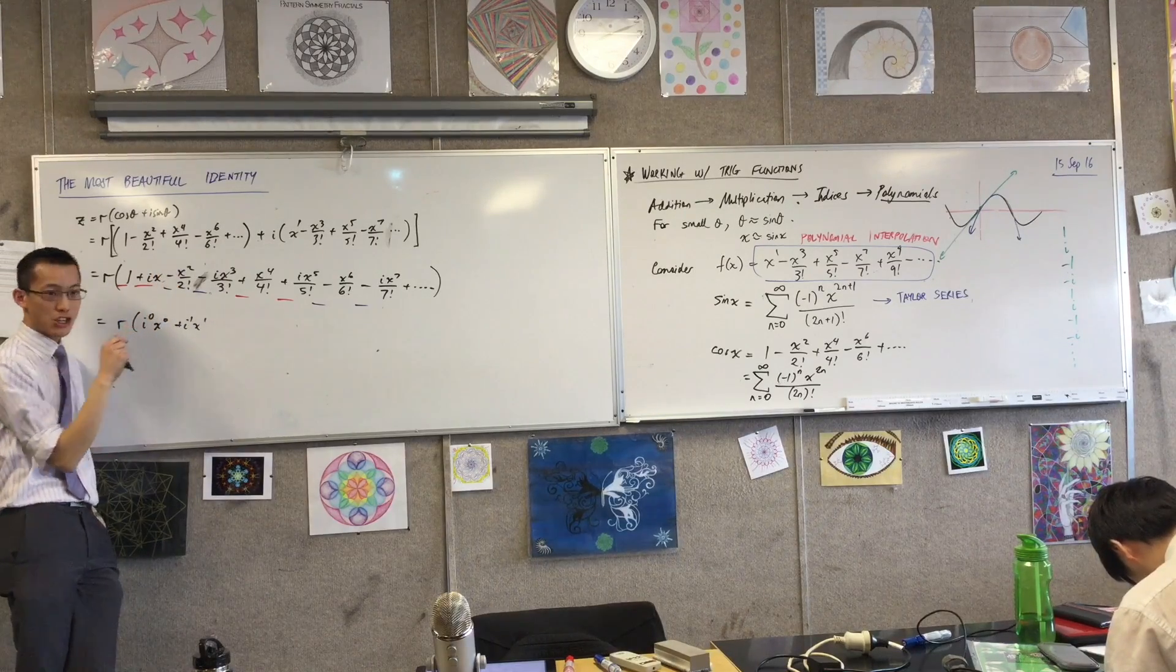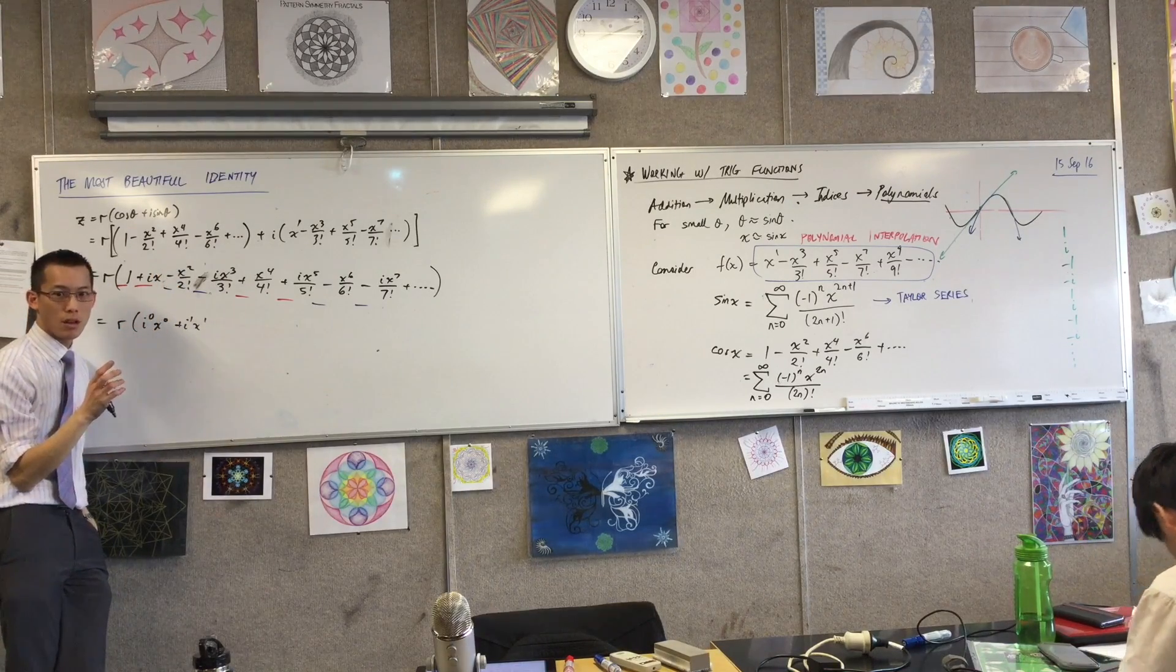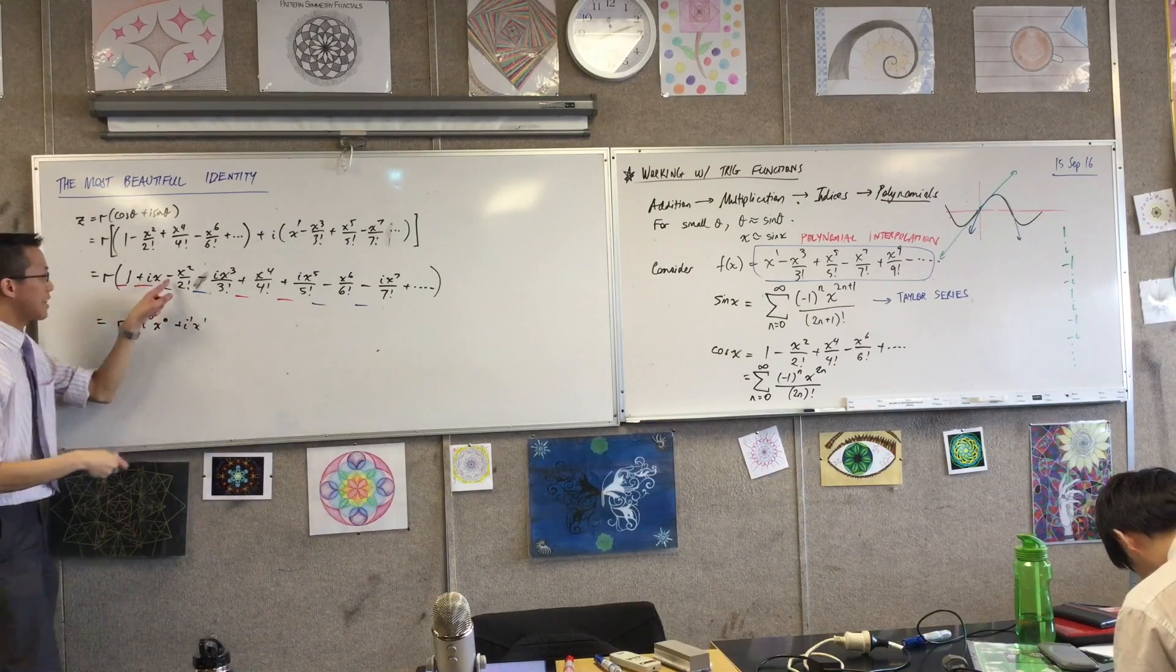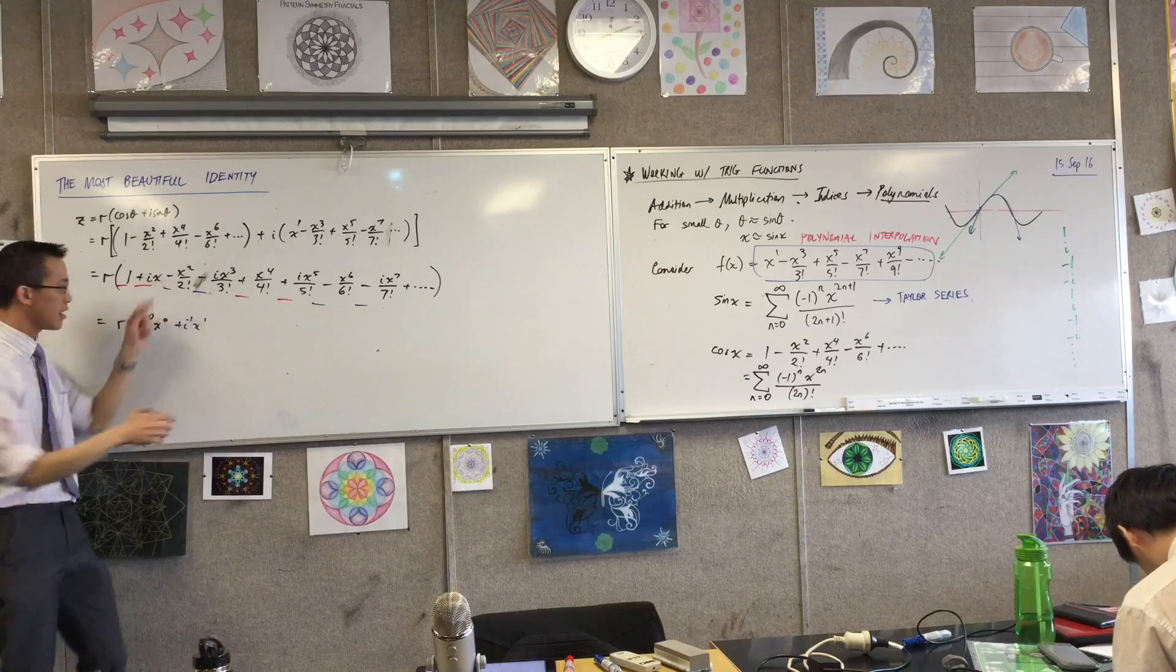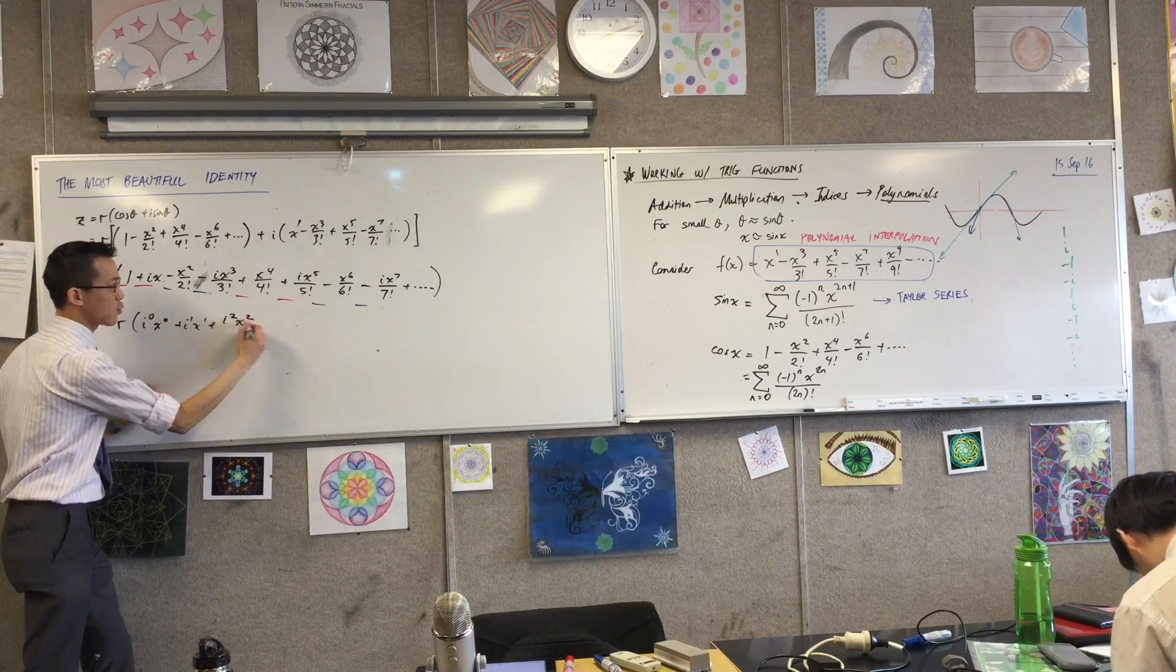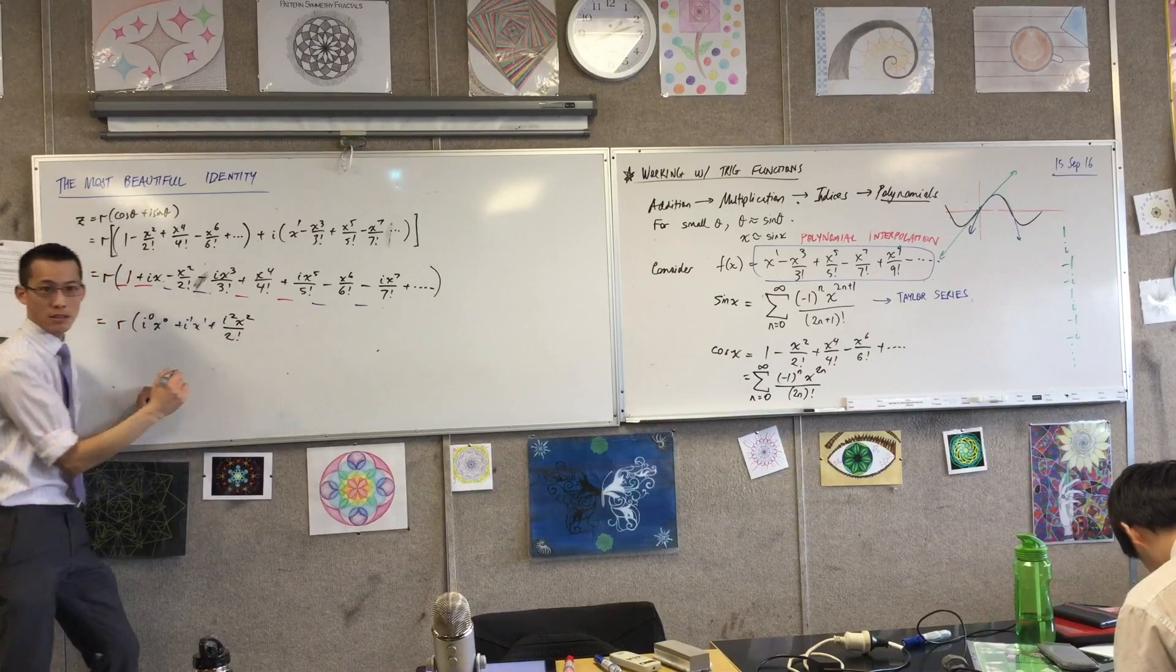There should be how many of them? There should be 2 i's. i squared. But if I take out an i squared, that sign gets changed. So this will be plus i squared x squared on 2 factorial. In fact, are you with me?